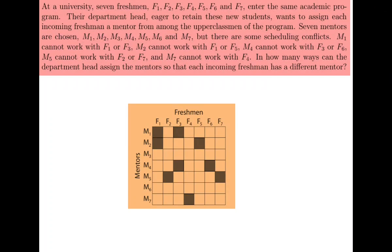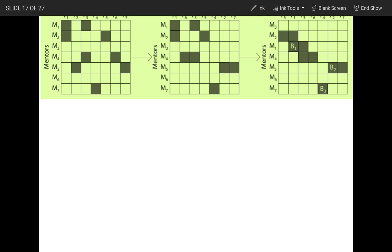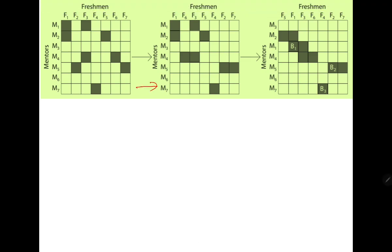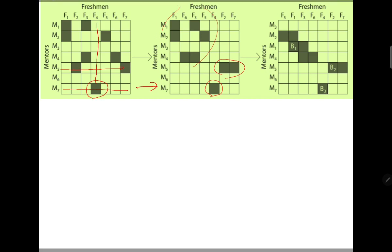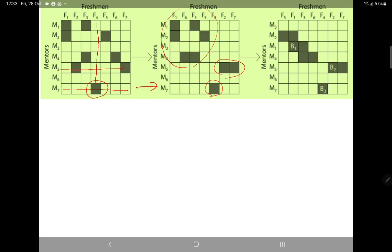Good morning everyone. Recall that in the last class we were discussing this problem, and this board is not very easy to handle. If you see this row and this square, there is nothing in the same row and same square. These two squares need to be clubbed together, so we club them and put them here, meaning the remaining six squares should be in the same board.